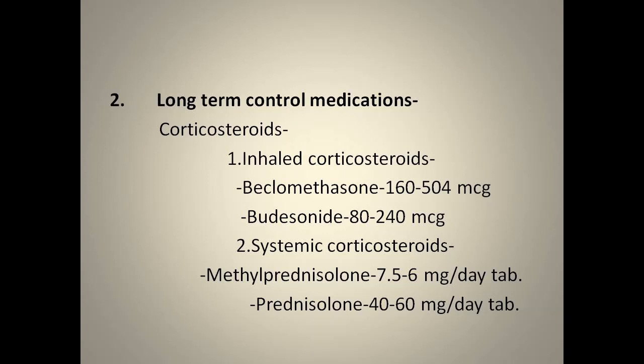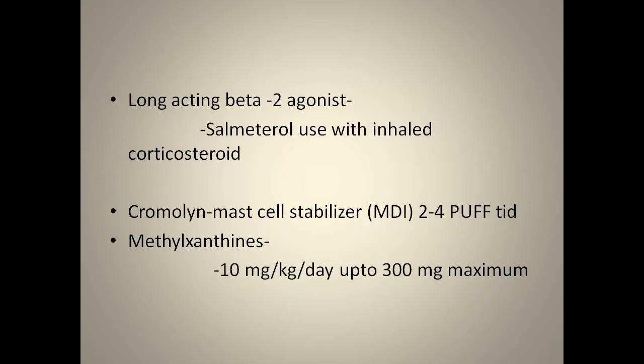Long-term control medications include inhaled corticosteroids as first line, with examples such as beclomethasone and budesonide; systemic corticosteroids like methylprednisolone and prednisolone in tablet form; long-acting beta-2 agonist bronchodilators like salmeterol used with inhaled corticosteroids; cromoglycate as a mast cell stabilizer to prevent mast cell activation; and methylxanthines as bronchodilators.